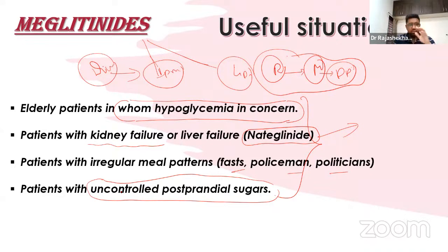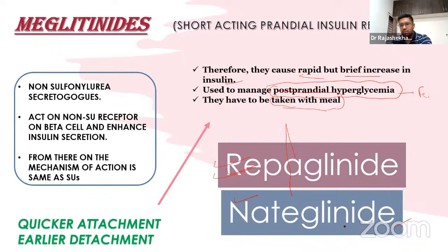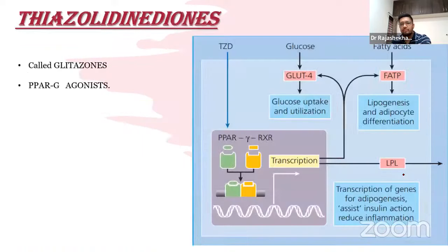A practical limitation of meglitinides is the need for multiple daily dosing — a tablet with each meal. Nateglinide costs about 8–9 rupees per tablet, making three-times-daily dosing expensive; repaglinide is 2–3 rupees per tablet and more feasible.